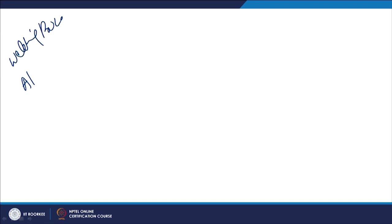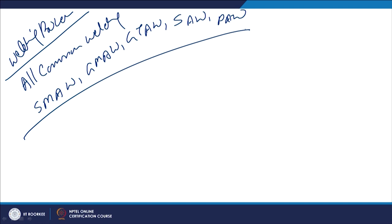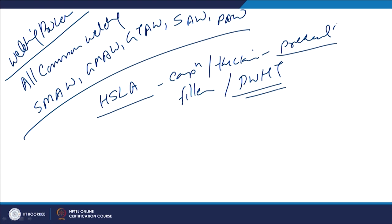Regarding welding processes, all common welding processes — shielded metal arc welding, gas metal arc welding, gas tungsten arc welding, submerged arc welding, and plasma arc welding — can all be effectively used for welding HSLAs. However, depending on composition and thickness, proper preheat and suitable filler composition must be selected, and post weld heat treatment may be given depending on fabrication conditions and cracking sensitivity.